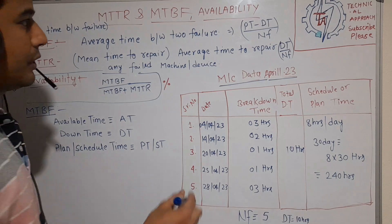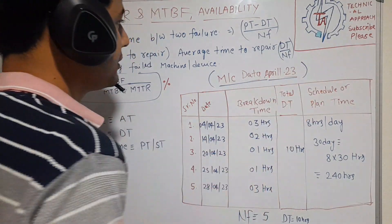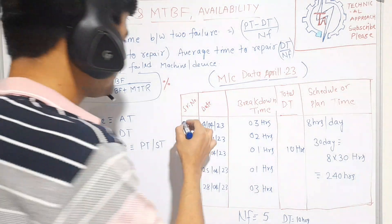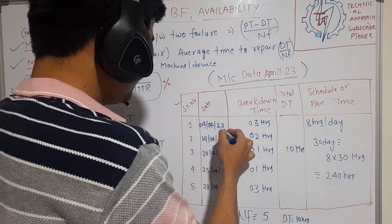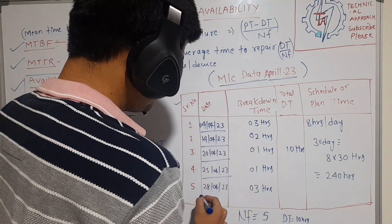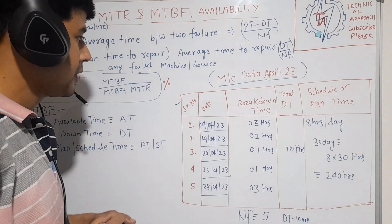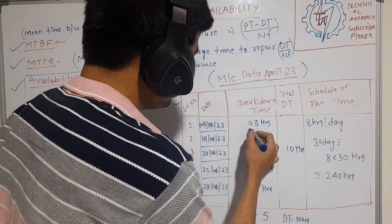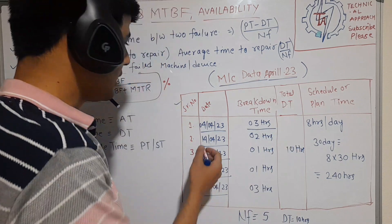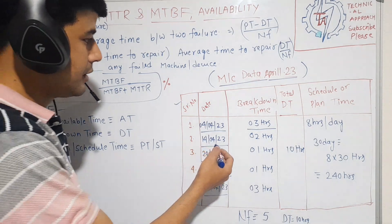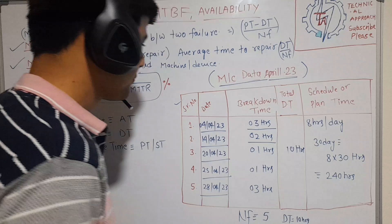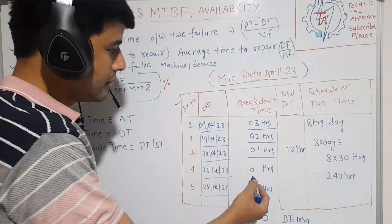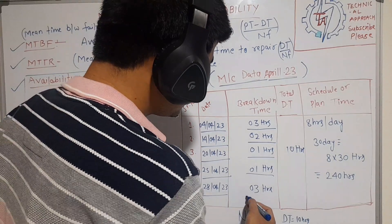Let's start with some machine summary data for the month of April 2023. There is data listed date-wise by serial number. On 4th April 2023, the breakdown time was 3 hours. Then on 14th April, it broke down again for 2 hours. Similarly, 20th April for 1 hour, 25th April for 1 hour, and 28th April for 3 hours.